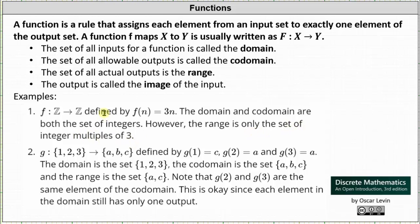However, the range is only the set of integer multiples of three, because the function is defined by f of n equals 3n. While n can be any integer, the output is always three times an integer, giving us a range of the set of integer multiples of three. Notice how the codomain and range are different in this case.